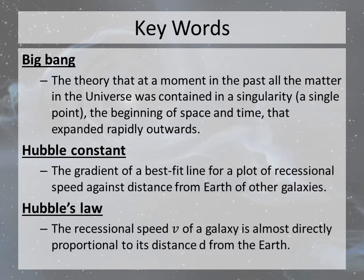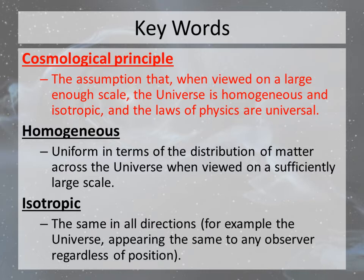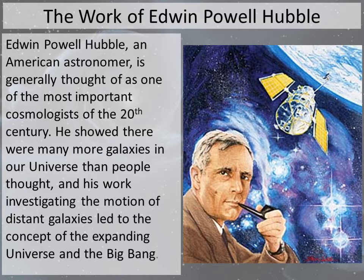And then you've got Hubble's Law, which is that when you plot this graph of recessional speed against distance from the Earth, you end up showing direct proportionality. The cosmology principle — really important, highlighted in red — is this idea that if you take a step far enough away from the universe and view it at a big enough scale, it's actually homogenous and isotropic. Homogenous means an even distribution of matter, and isotropic means it's the same in all directions. No matter what position you are in the universe, it appears the same — it's a crazy principle, but it allows us to apply the laws of physics across the universe.